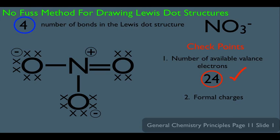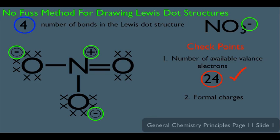Here's another thing to verify using the formal charges. Look at all the formal charges on the molecule: we have negative, plus, and negative. Those formal charges must add up to the overall charge of the molecule. NO3 minus has an overall charge of negative one, and adding up our formal charges — minus, plus, minus — gives negative one. They match. One important note: this no-fuss method only works for molecules where all atoms require an octet, so make sure all atoms in your molecule are on the octet rule list before using this method.